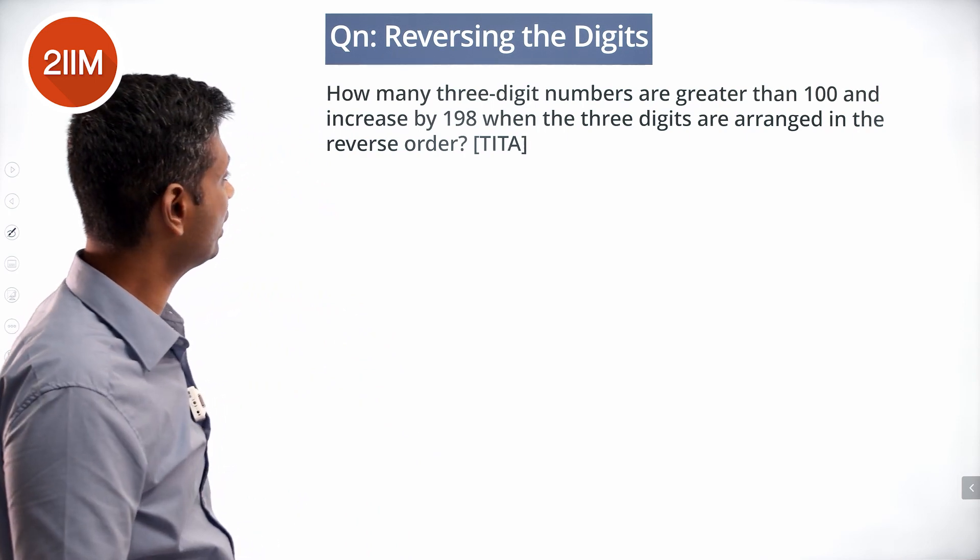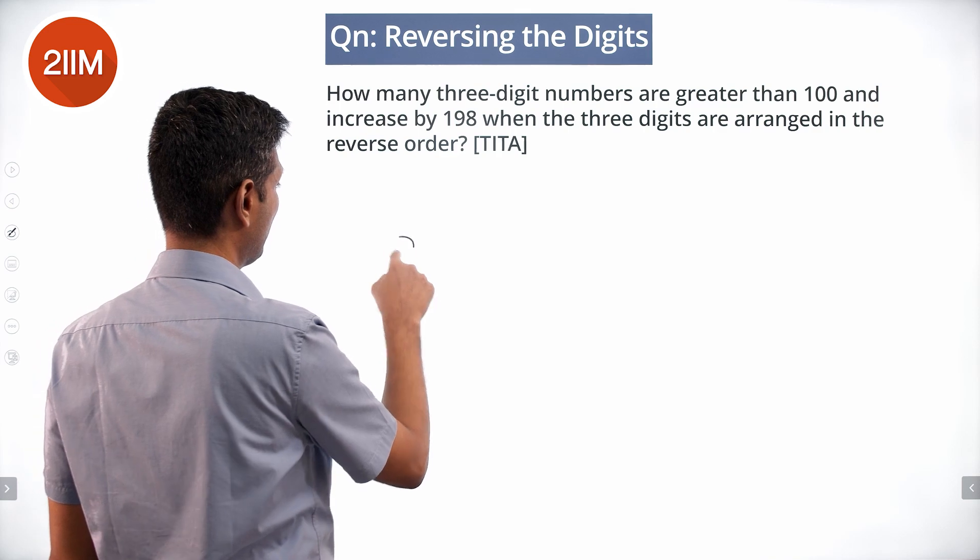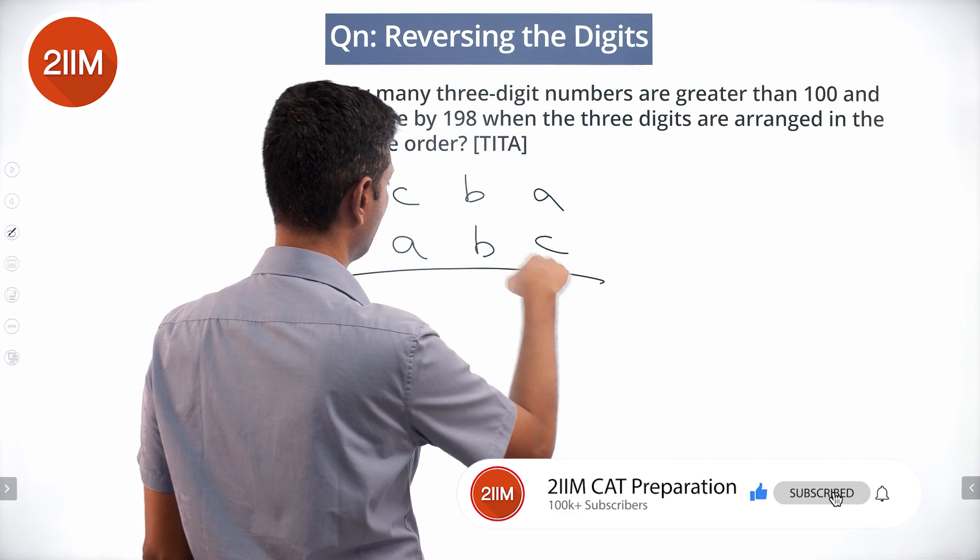The number increases by 198 when the three digits are arranged in reverse order. So we have ABC and CBA, and we subtract these.